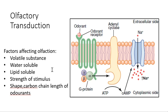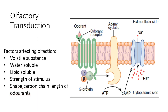Sodium influx leads to depolarization, and depolarization leads to exocytosis of the neurotransmitter and hence firing of the nerve. Different factors affect olfaction: volatile substances bind easily to receptors and stimulate olfaction; if a substance is water-soluble, that also makes it easy; if it is lipid-soluble, it can cross the membrane very easily. The strength of stimulus matters — a strong odor is sensed more easily. The shape of the molecule must match the GPCR receptor, and the carbon chain length also affects olfaction.